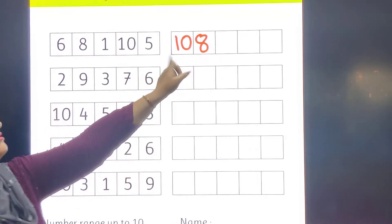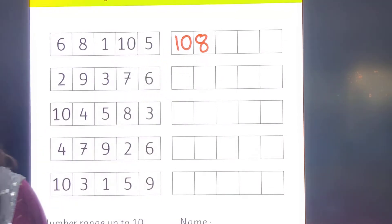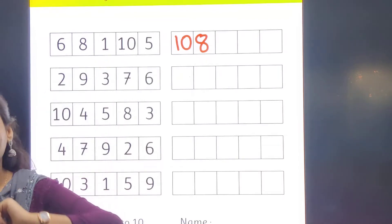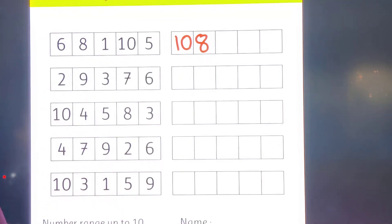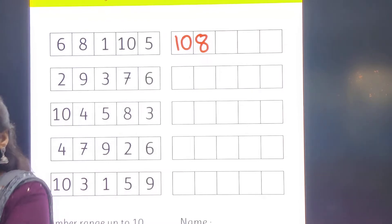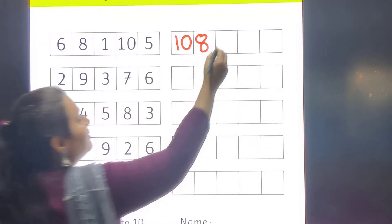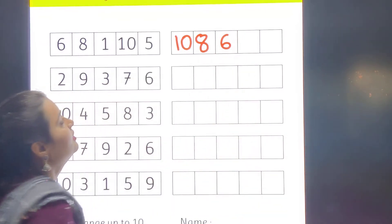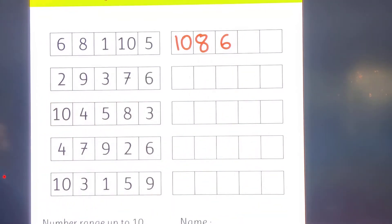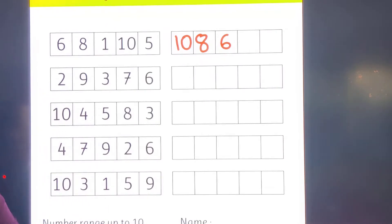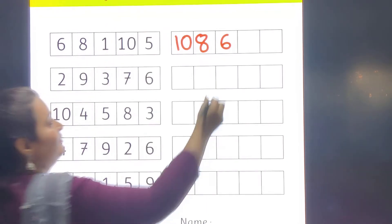So I will write number 8 in the next block. Then which number will come? 10, 9, 8, 7, 6. 6 will come. Is 6 there? Yes, 6 is there, so I will write number 6. Then which number will come? 10, 9, 8, 7, 6, 5. Is 5 there? Yes, 5 is there.